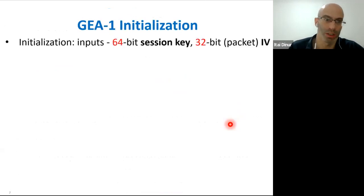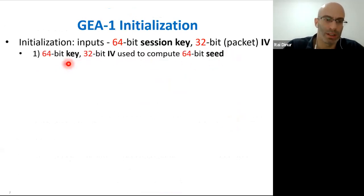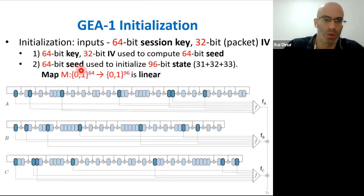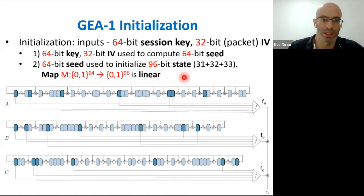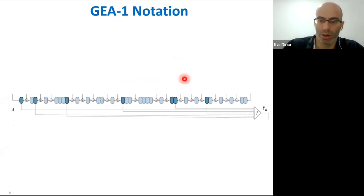Let me first focus on the GEA1 attack. The initialization process takes as input a 64-bit session key and a 32-bit IV, which are used to compute a 64-bit seed. The seed then initializes the 96-bit initial state of GEA1, composed of three LFSRs — A, B, and C — of sizes 31, 32, and 33 bits respectively. This mapping from the seed to the 96-bit state, which we denote M, is a linear function.